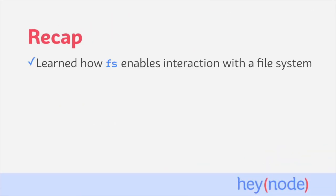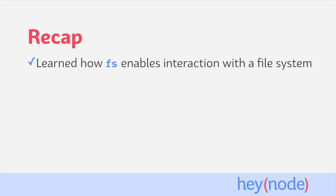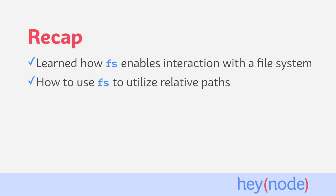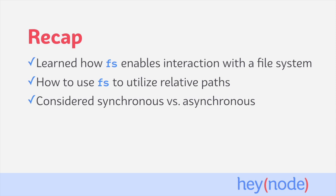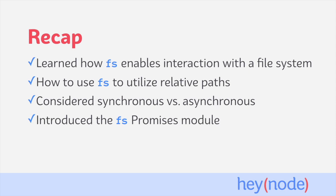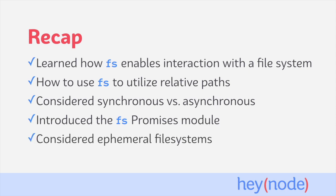To recap, in this tutorial we learned that FS enables you to interact with the file system. We learned how to use __dirname and path.join in order to utilize relative paths successfully with FS. We talked briefly about the differences between synchronous and asynchronous methods in the FS module. We also introduced the new promise support available in the FS module. And finally, we considered the restrictions that an ephemeral file system puts on your ability to read and write files from the file system.